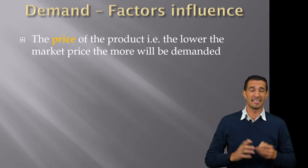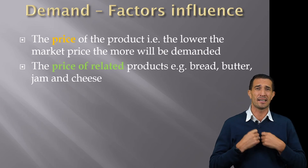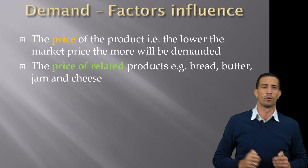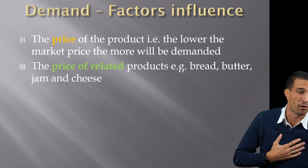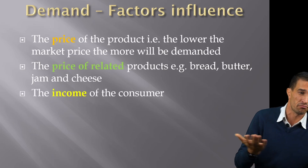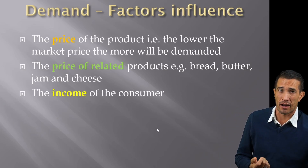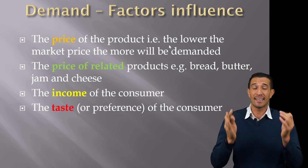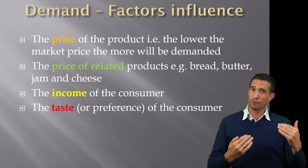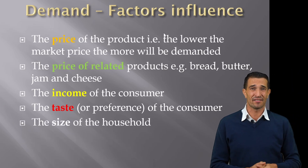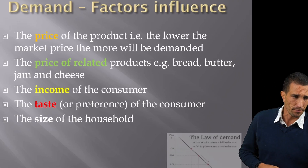Certain factors influence demand: the price of the product, which we just discussed; the price of related goods — for example, if I sell bread and someone sells butter or jam, those related products can massively influence demand; consumer income — if consumers have less income they can't buy as much; their taste — if I love fig jam this year I won't buy apricot jam, lowering its demand; and the size of the household — a family of four has different demand than someone living alone.